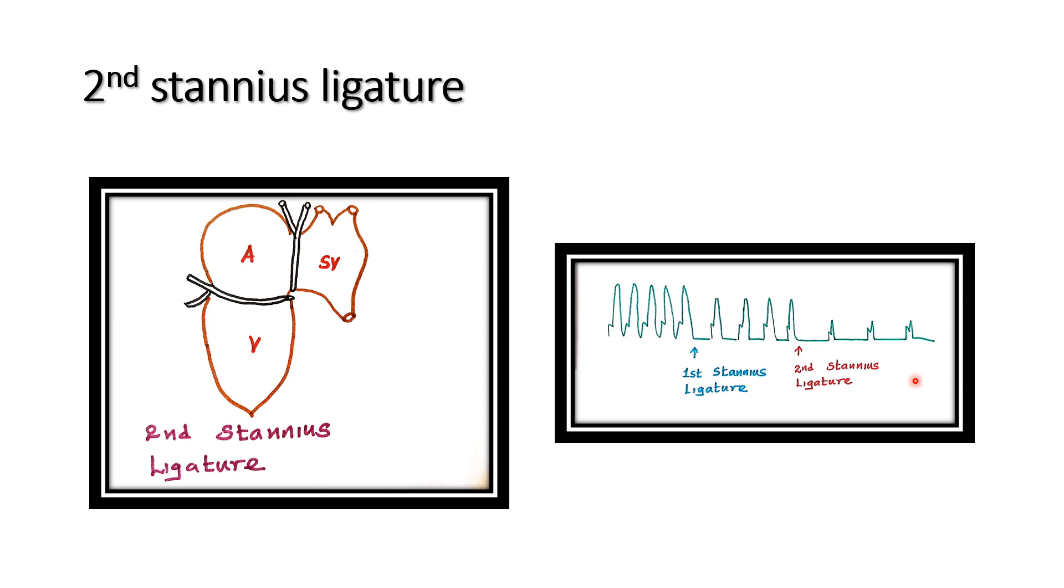In the human being, primary pacemaker tissue is the SA node. If the SA node is not producing the impulse, the AV node takes over the function. But the AV node generating impulse is less than SA node, it is around 40 to 60. If the AV node also failed, it will be taken by the bundle of His. If bundle of His is failed, then Purkinje fibers or ventricle will take over the action. This is demonstrated by the Stannius ligature experiment in the frog.